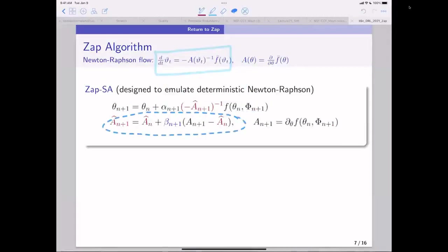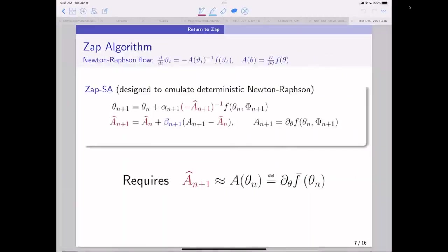And this is a stochastic approximation algorithm to estimate this, the mean of this matrix. And the secret sauce is we want to track A of theta n. And so therefore we need very high gain here compared to this. We need theta n to evolve more slowly than A hat n. And so this is going to be big. So this would be a lot of variance in this recursion, but then it gets multiplied by alpha and it gets filtered off. So it's really not a problem.